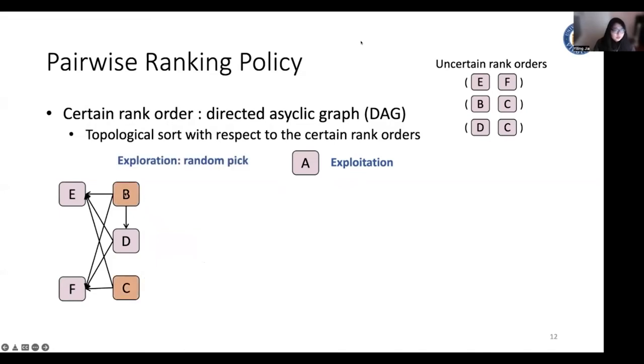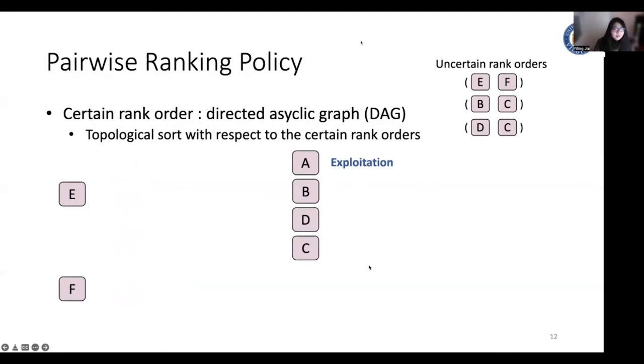Next, we will check the two documents B and C, because both of them do not have in-links. For these two documents, we will randomly pick one among these two documents. This is equivalent to the exploration on these uncertain rank orders. Then we move to the next step. And currently, our candidate documents are C and D. We will do the same to do a random pick to perform this exploration between these two, this uncertain rank order. And next, we compare the document pair E and F to randomly pick one to perform the exploration. Finally, we generated this rank list.